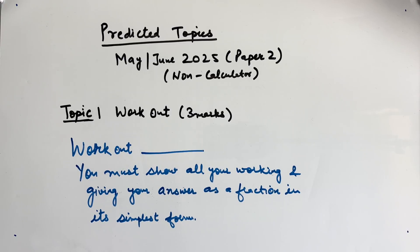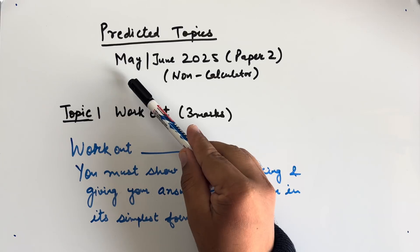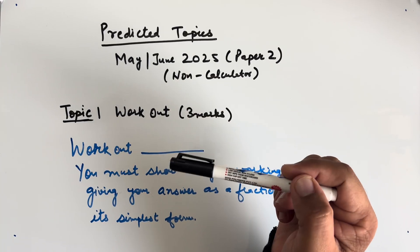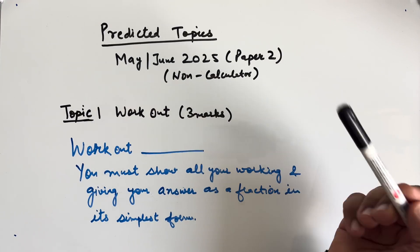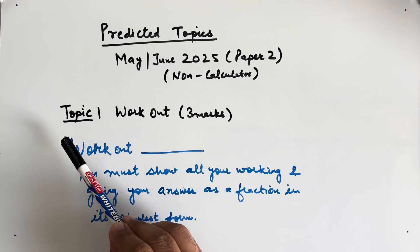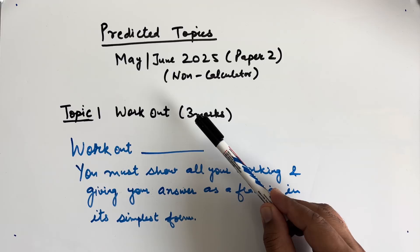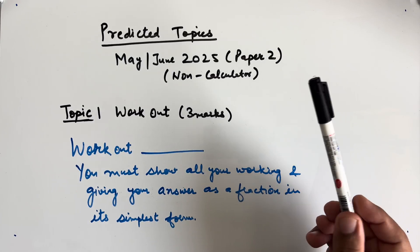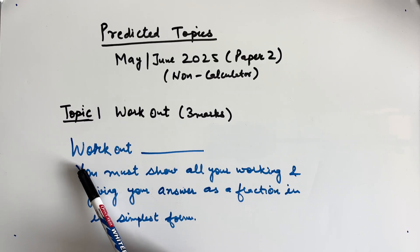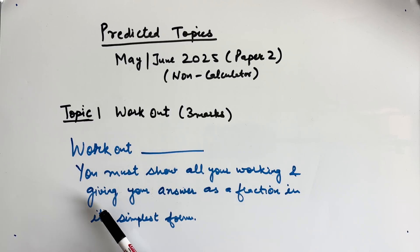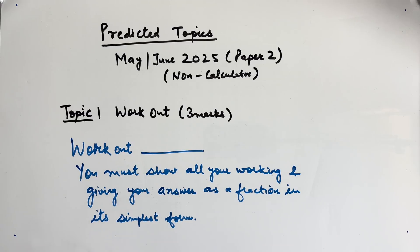Hello students. In this video we will be discussing the predicted topics for my June 2025 Paper 2 non-calculator. The first predicted topic is fractions. Questions come up to two or three marks. The question will say: work out an expression, you must show all your working and give your answer in its simplest form.